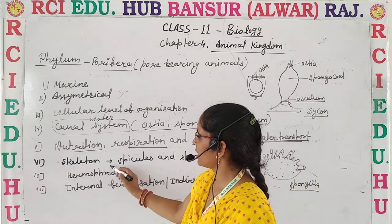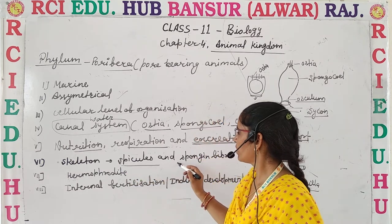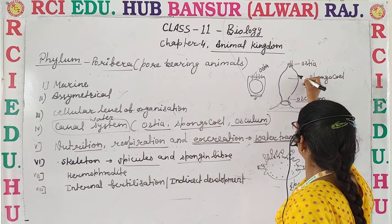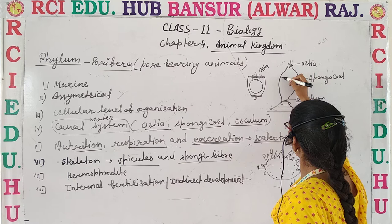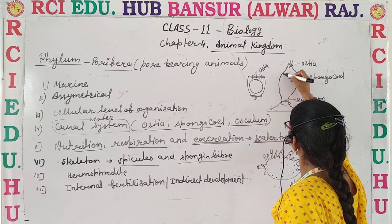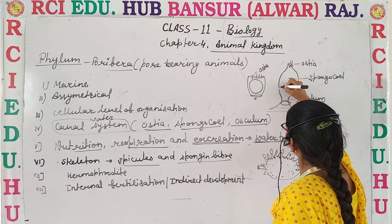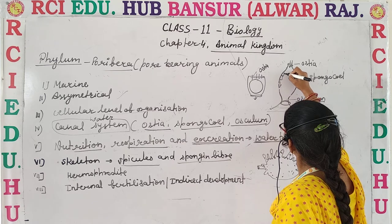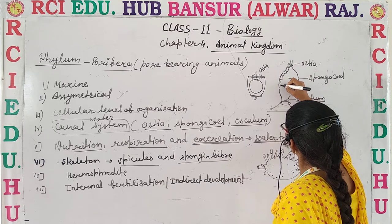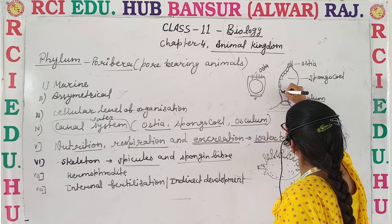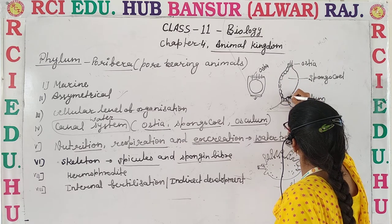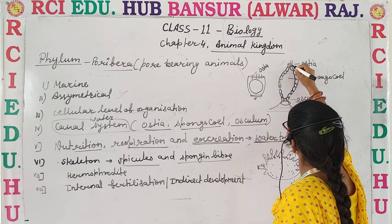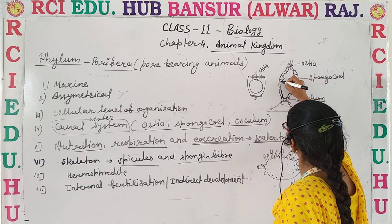Skeleton: the skeleton mainly consists of spicules and spongy fiber. Their body has a structure like that — a skeleton consisting of spongy fiber and spicules.